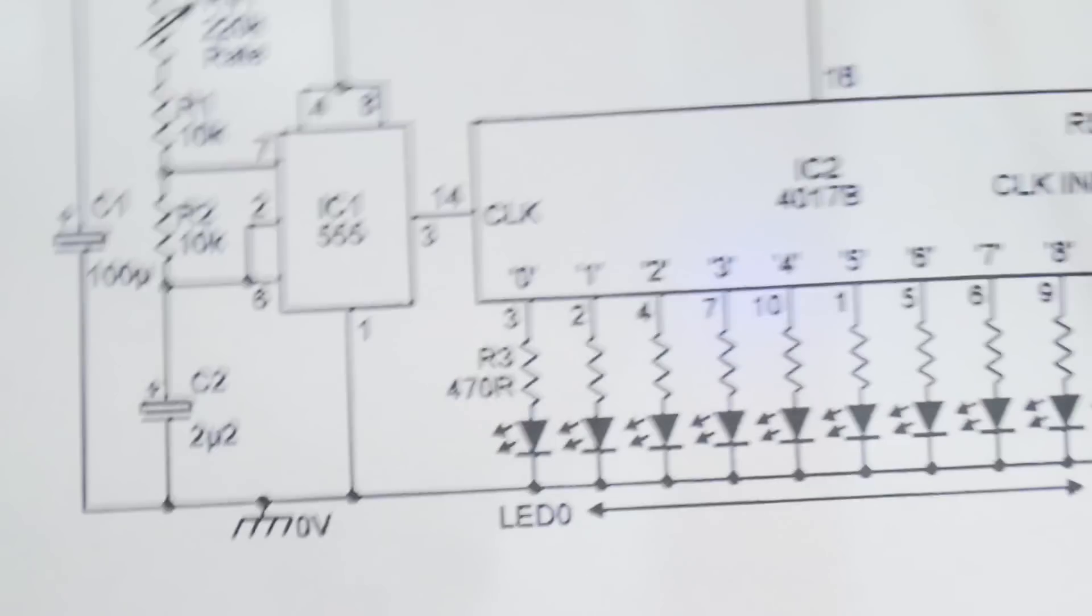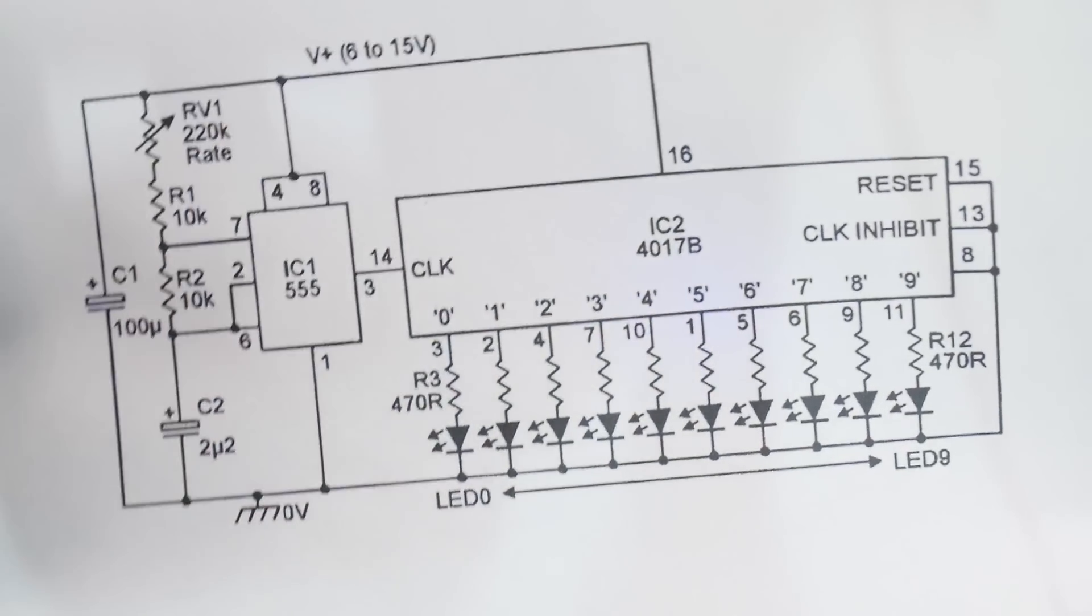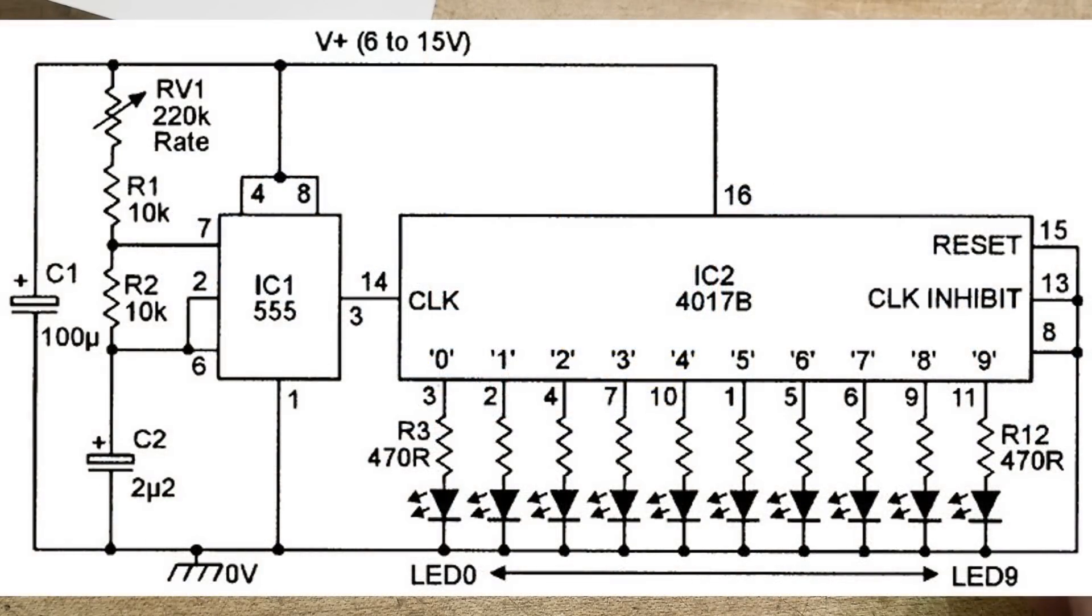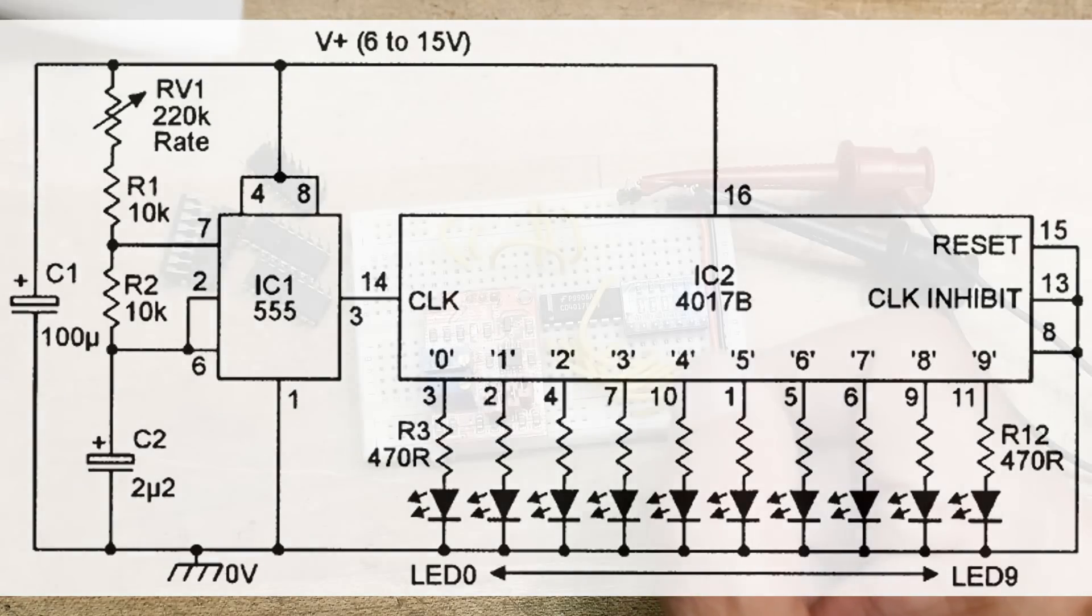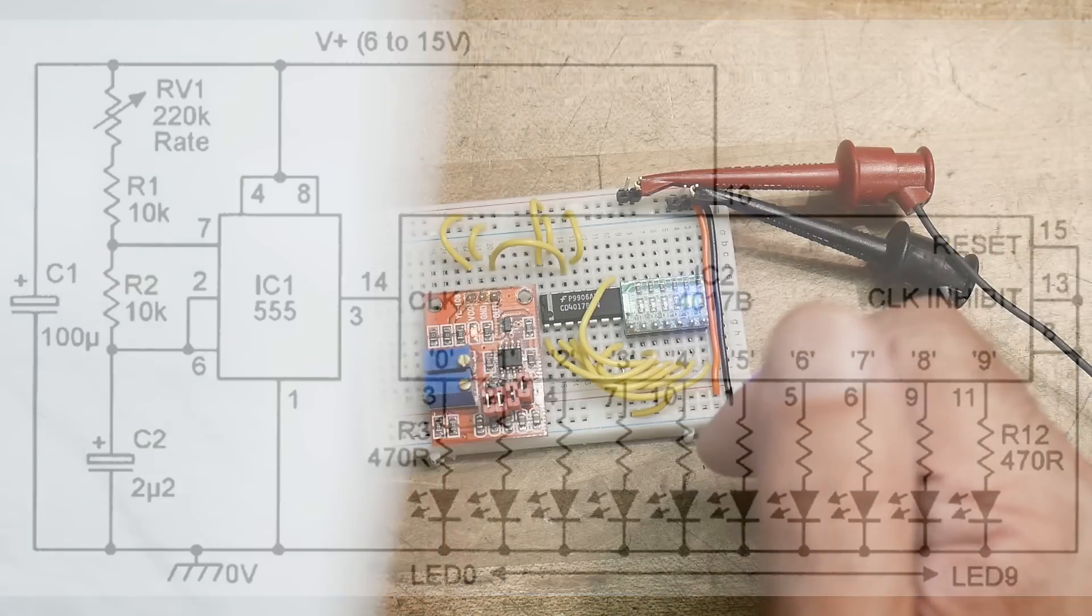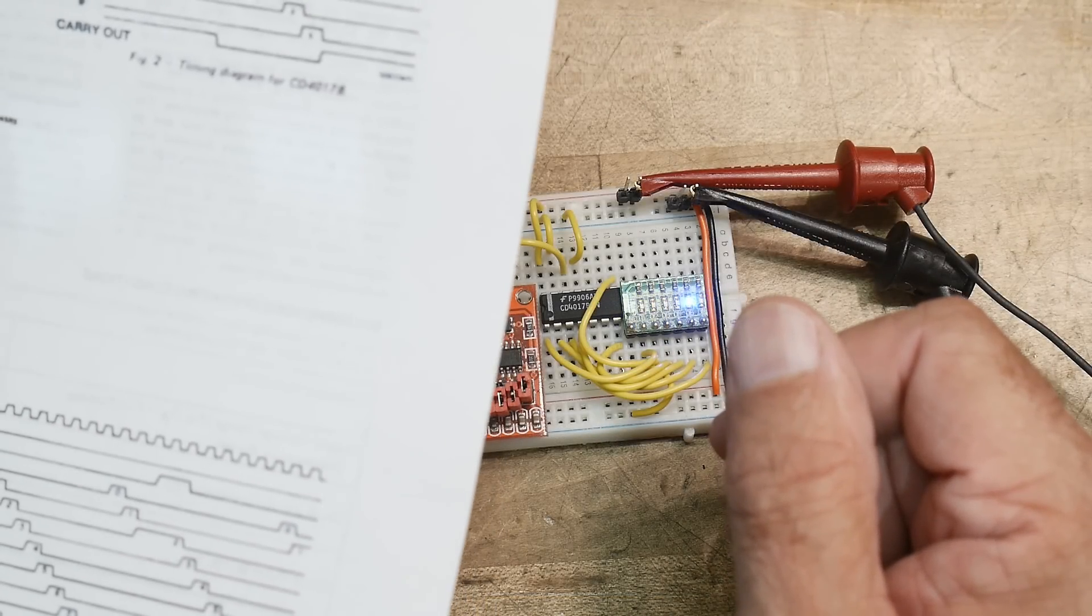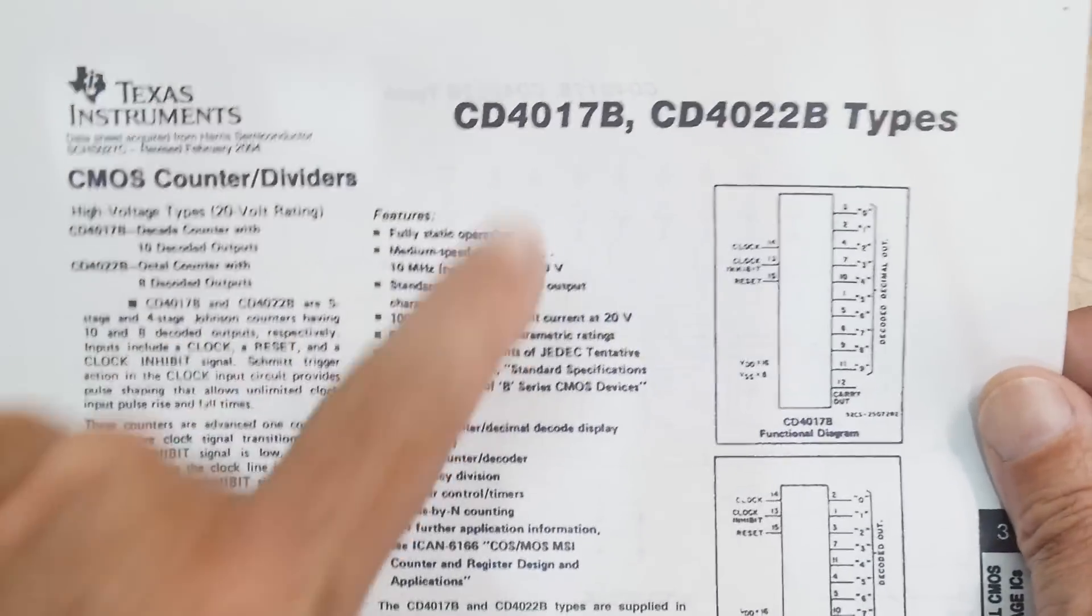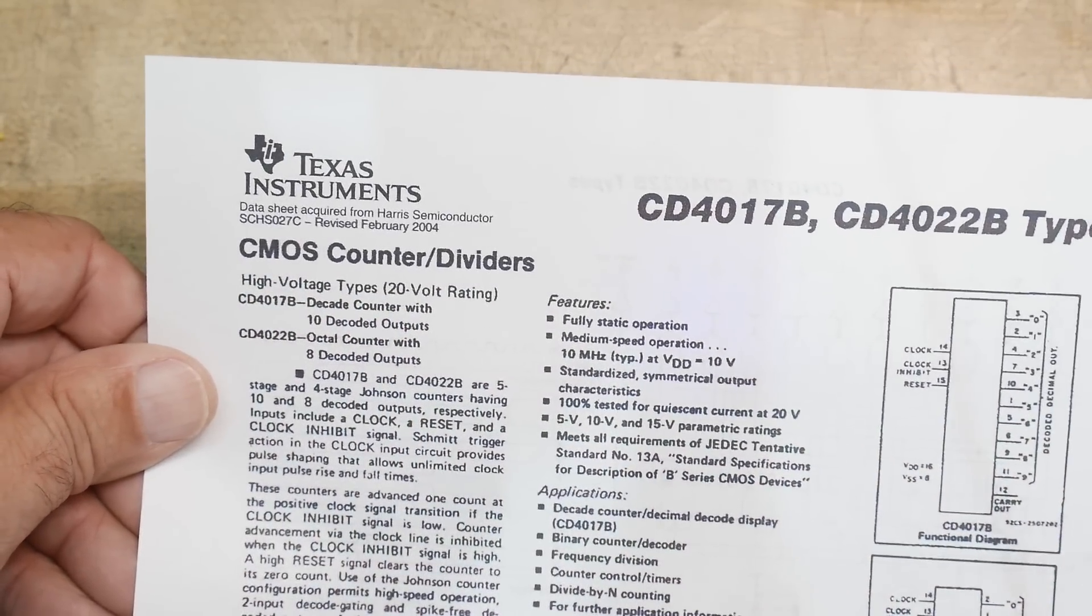It's a 555 timer and some LEDs - what's called chasing lights. You can just go to eBay and buy one for 99 cents already assembled. But if you want to learn about circuits, this is a good way to do it. These 4000 series chips have a high voltage rating of 20 volts.